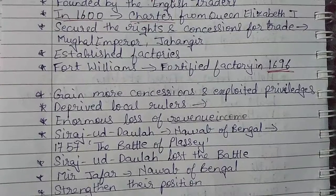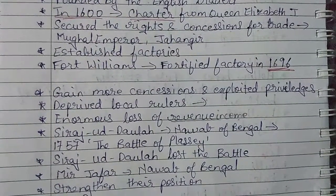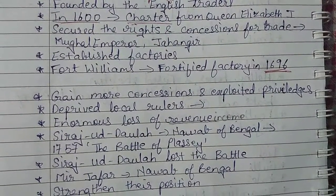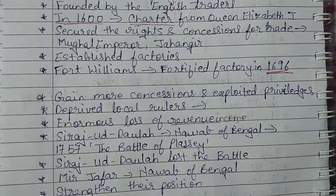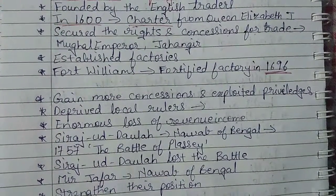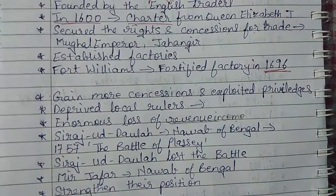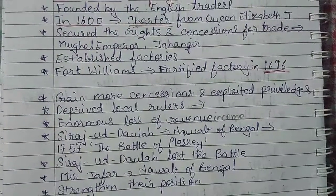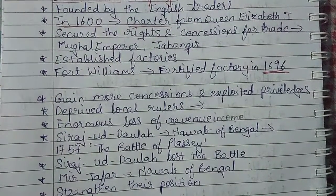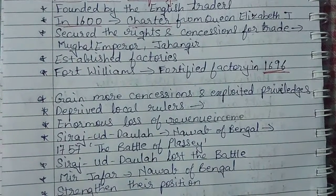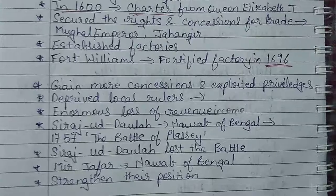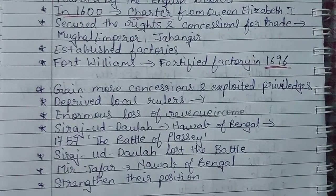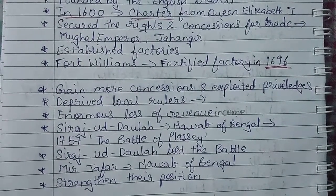There was a Nawab of that time named Siraj ud-Daulah, who was the Nawab of Bengal. He wanted to check the intentions of the British — what they were up to, what they wanted to do, and what their evil or bad intentions were. To check this, a battle was fought between the British and Siraj ud-Daulah. In 1757, a battle known as the Battle of Plassey was fought between the British and the Nawab Siraj ud-Daulah.